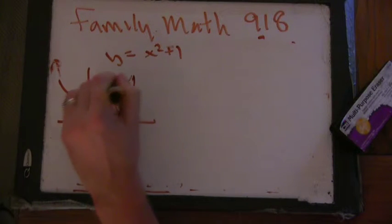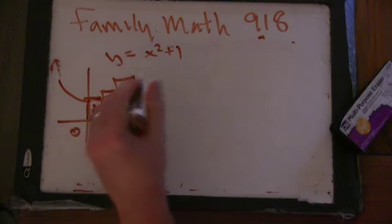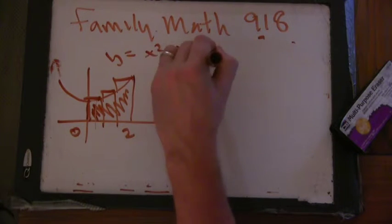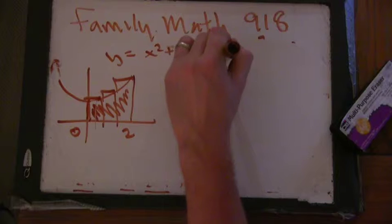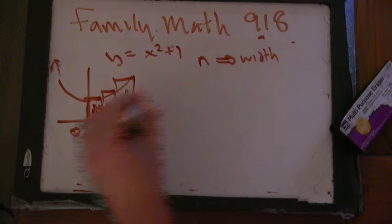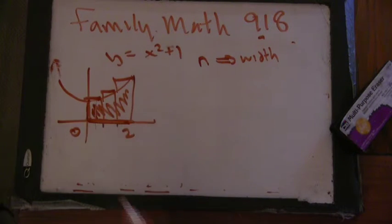Yeah, good thinking. We can do that and then we can make the rectangles really really small. Yeah, and so the interesting thing here is you get a really kind of complicated formula. So if I have n rectangles, I'm going to squeeze n rectangles from zero to two. How wide is each rectangle? It's two over n. That's right.